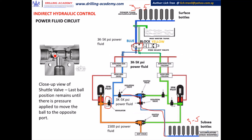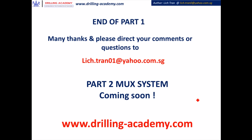This is how the shuttle valve works. The shuttle valve is very simple: it has one port in, a second port in, and one port out. If you apply pressure into one port, the pressure blows the ball to the other side, sealing off that port and allowing connection from the first port to the output port. If you apply pressure from the other direction, it blows the ball the other way, allowing connection from that side to the output port. If you stop applying pressure, the ball remains at the last position. So basically, this is how the power fluid circuit works and how the shuttle valve works. These are the basics and the foundation of how the indirect hydraulic control system works.